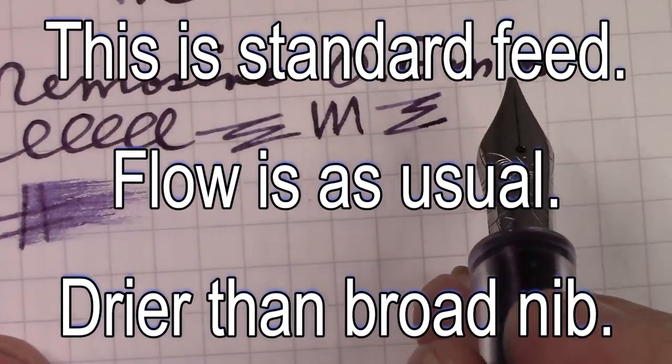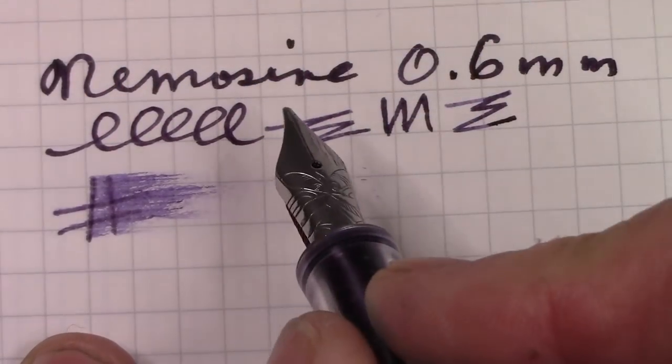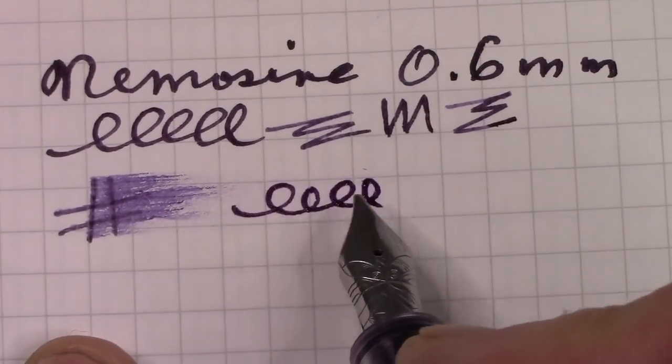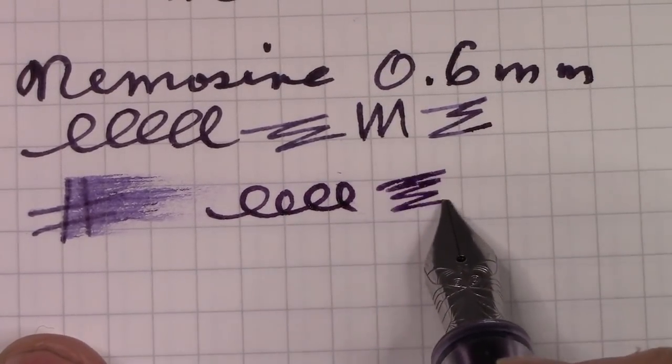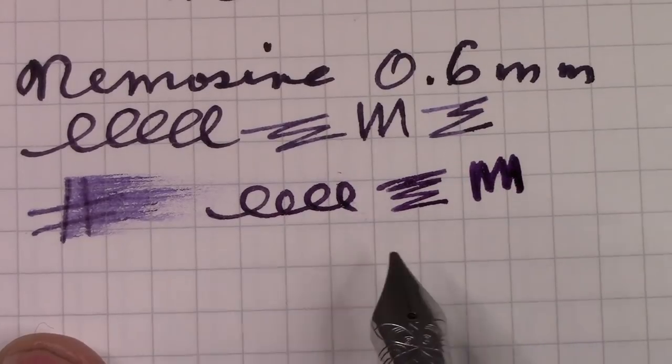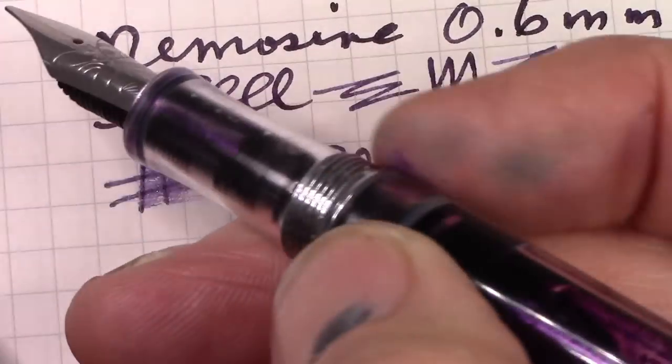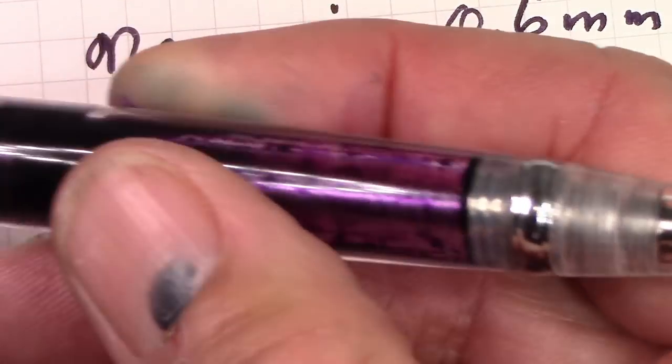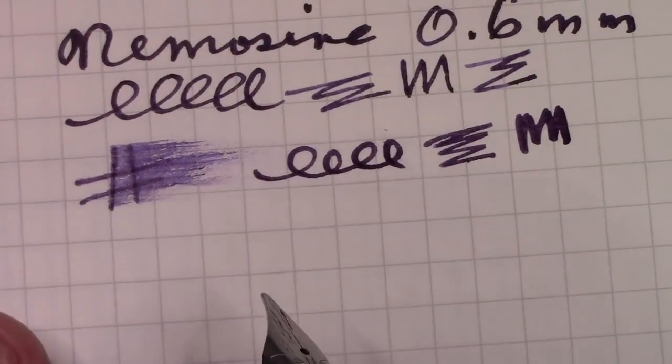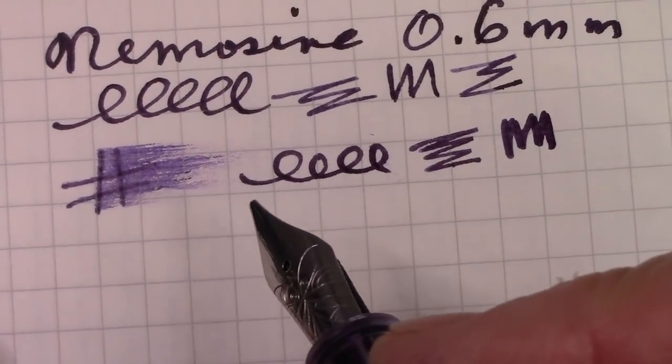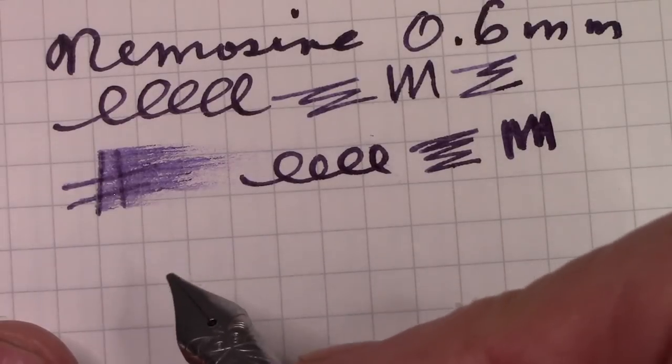This nib is definitely drier than the broad nib. When I first put this in, I wasn't happy with it because that broad nib was just so impressive. But I've written with this for a couple days now and I like it, it's grown on me. You do still have to make certain that cap is open. As you can see I'm running a little bit low on ink, so I'm probably going to fill it at the end of this video.